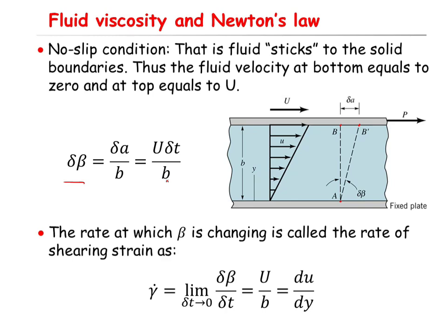The rate at which beta is changing is called the rate of shearing strain, represented by gamma dot. Gamma dot is equal to the derivative of delta beta with respect to time. The derivative of U·delta t divided by B with respect to time equals U divided by B. And from the schematic, U divided by B equals du/dy.